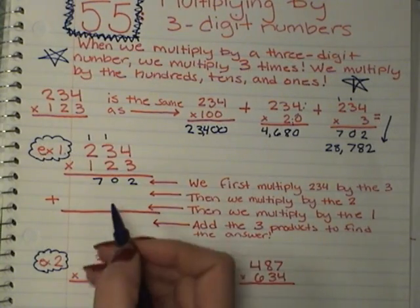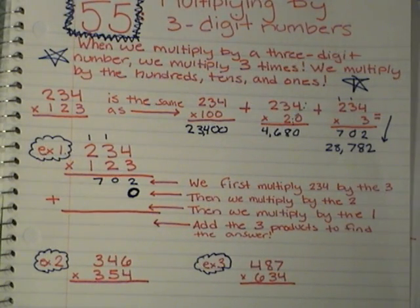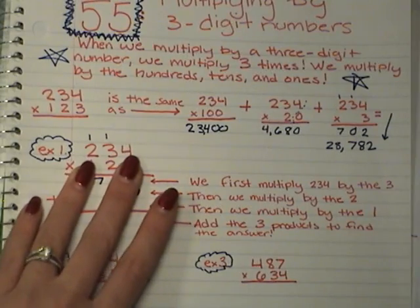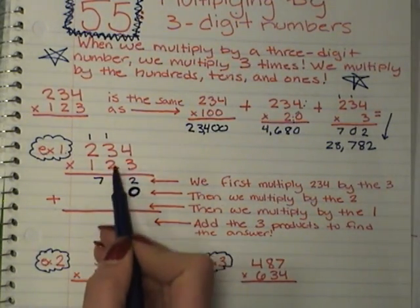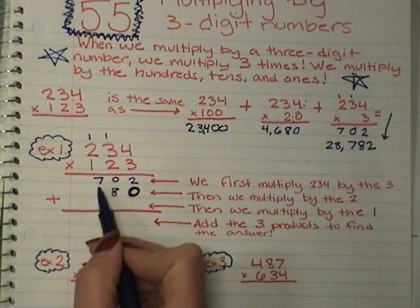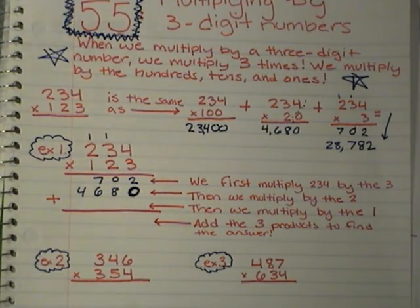Now, like we've done before, you have to drop your 0 into your next column. Don't forget your 0. If some of you forgot your 0 while doing these problems, you will notice that your answers are wrong and they're smaller. Okay, so we dropped our 0. Now, we're going to multiply by this 2. We are going to go to the 4 first. 2 times 4 is 8, 2 times 3 is 6, 2 times 2 is 4.